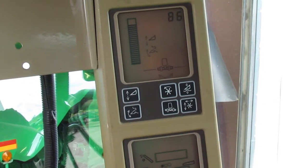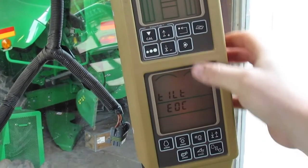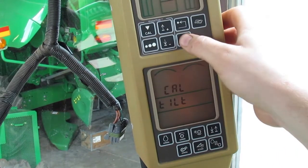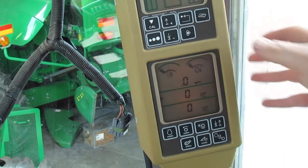Go back down, hit cal on the bottom screen. It'll say EOC, end of calibration, hit enter, and you can back out.